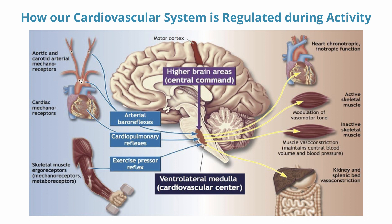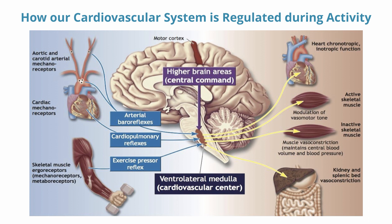These signals are incorporated as higher brain areas receive input from receptors around the body. Some of these receptors work through arterial baroreflexes, cardiopulmonary reflexes, and exercise pressor reflexes. Baroreceptors are located in the aorta — the main artery carrying blood away from the heart — and in the carotid arteries, which deliver blood to the head. These baroreceptors sense blood pressure and relay information through the nervous system. We also have cardiac mechanoreceptors in the heart that work through cardiopulmonary reflexes. The exercise pressor reflex works through receptors in our skeletal muscles that are sensitive to movement and metabolites produced during exercise.